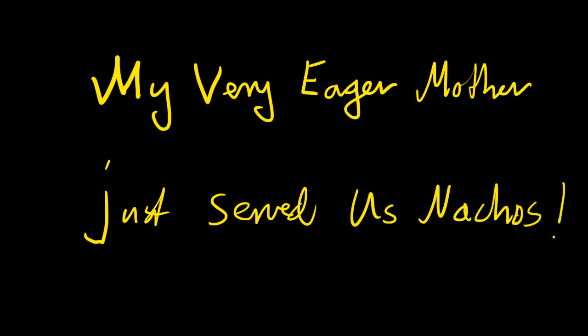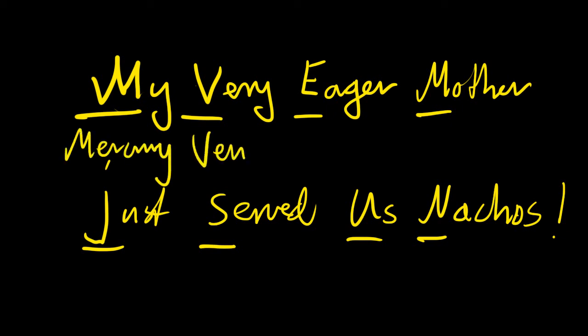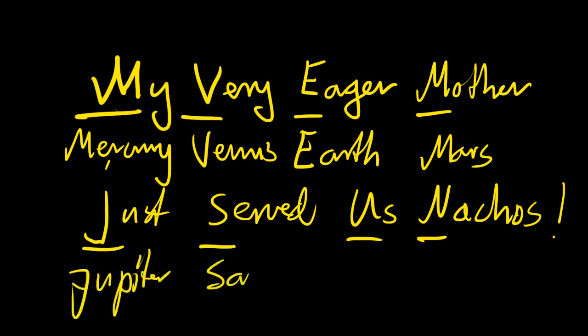So, you take the M, the V, the E, the M, the J, the S, the U, the N. Then you have the sequence of the planets. This is of course Mercury, Venus, Earth, Mars, Jupiter, Saturn, Uranus, and Neptune.